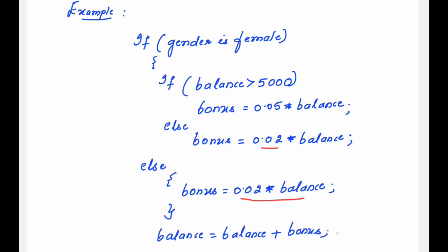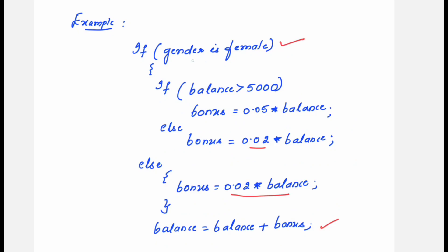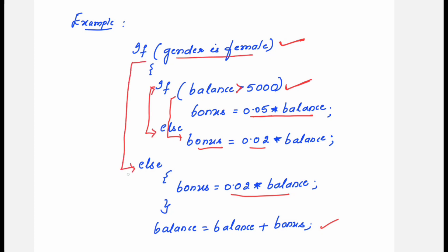Finally, at the end, the balance is updated. First, the code checks if the gender is female. For that female, it checks whether the balance is more than 5,000 rupees — if so, the company gives 5% of the balance as bonus. If the female employee's balance is not greater than 5,000, the else part executes and only 2% of the balance is given. This is the inner if. If the gender is male, the else part executes, and then the balance is updated.